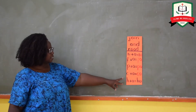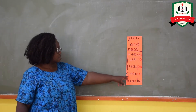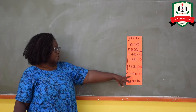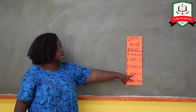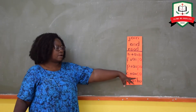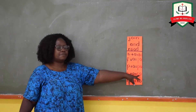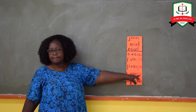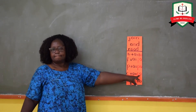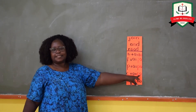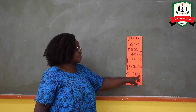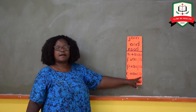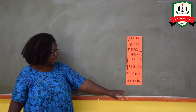Let's look at sound ku. When we take sound ku and a together, who can read for me the word? It says ka. Everybody, ka. Very good.